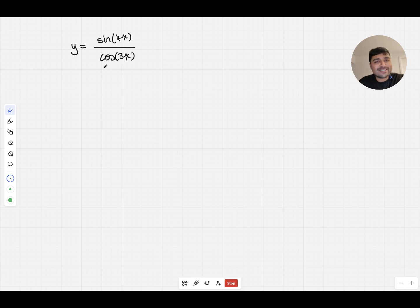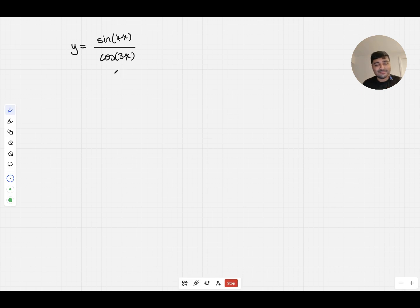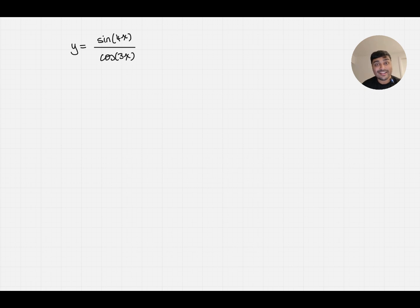Here is a really interesting graph which we're going to be aiming to sketch in this video. This was actually shared with me by one of my students and I thought it was a really interesting one because it looks very close to tan of either 4x or 3x, but it's neither of those functions. I encourage you to pause the video now and try and sketch this graph as if you were in an interview, explaining your thought process along the way. I'm going to show you how I would explain this in an Oxford or Cambridge maths interview.